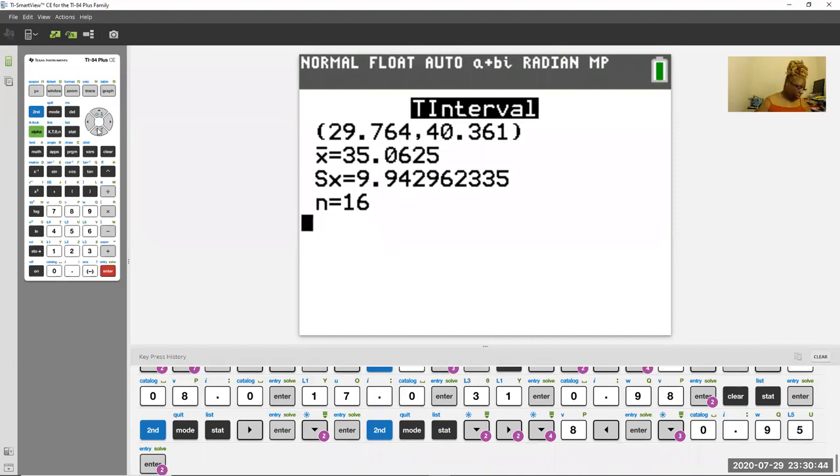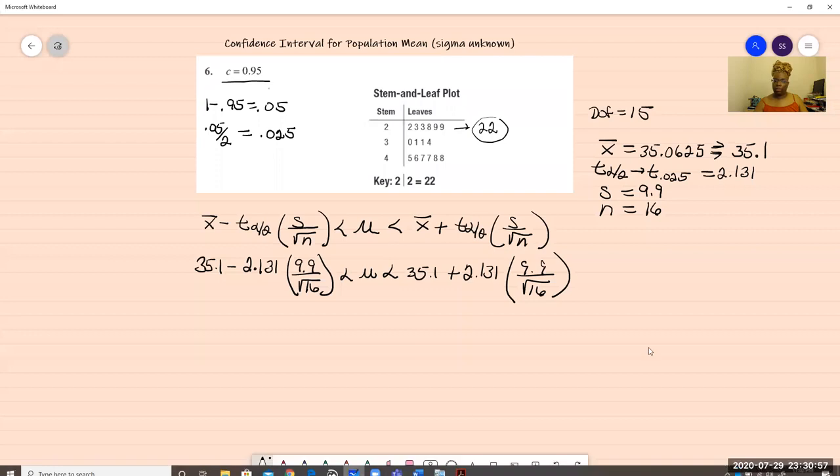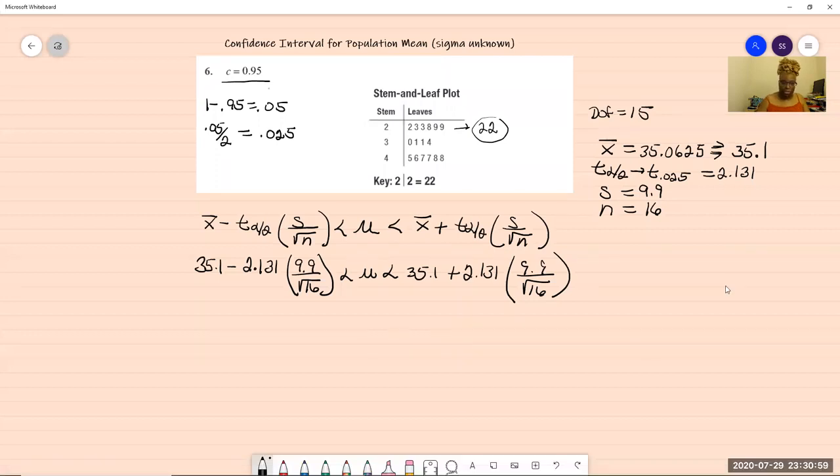So we get our numbers here and we have to round them to the appropriate decimal place to get them right. Remember that's one more, since it's the mean, is one more decimal place than is listed in the data. So let's go back and write out our final answer so we can finish up this problem.